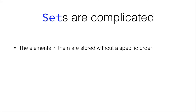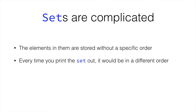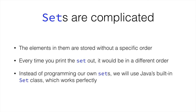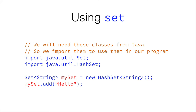The elements in sets are stored without an order, so you don't have to worry about ordering them. Every time you print the set out, it will be in a different order. And instead of programming our own sets, we can use Java's built-in set class, which is awesome because that means we save ourselves some work. We'll need some classes to import — we need to import Set and HashSet. Just like List and ArrayList, Set is the interface that HashSet comes from, so you don't directly create a Set. You create a HashSet that comes from a Set, and you decide what you're going to store in them, then two brackets at the end and you can add things. It's very similar in terms of syntax to the list.